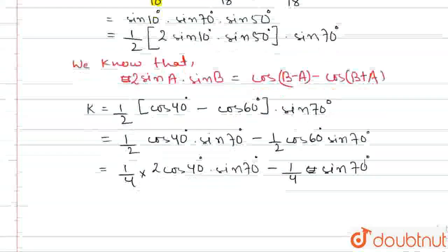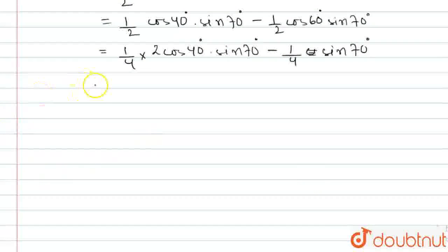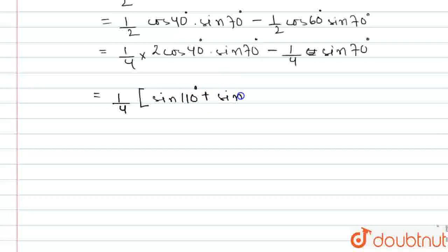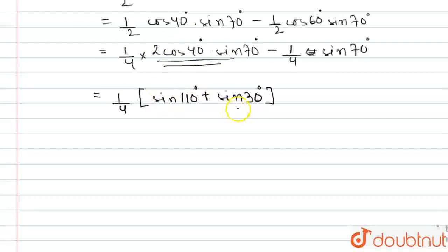Now the first term, (1/4) into 2·cos(40°)·sin(70°), can be written using the formula 2·cosA·sinB = sin(A+B) + sin(B−A). So the first term becomes (1/4) into [sin(110°) + sin(30°)], and the second term remains (1/4)·sin(70°).